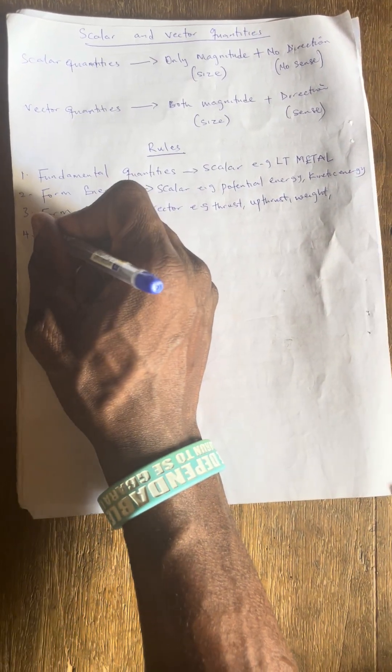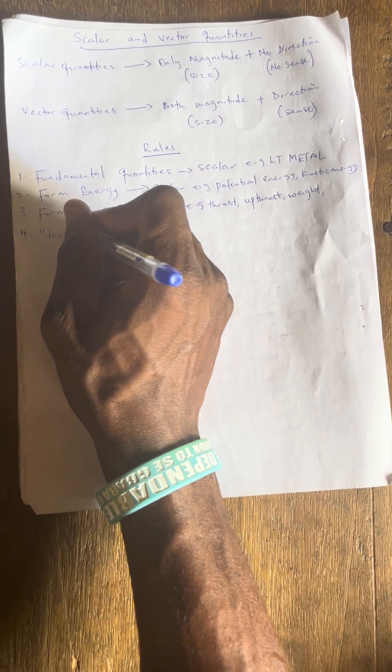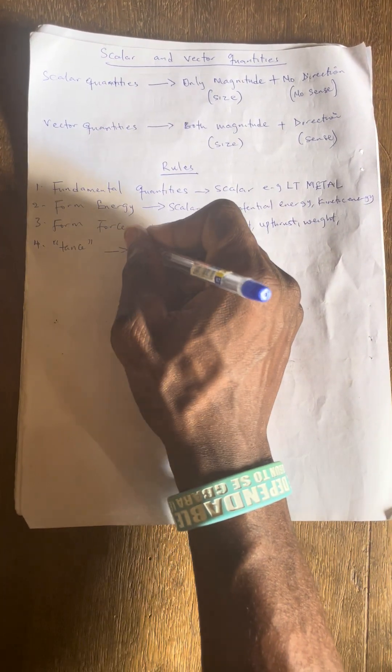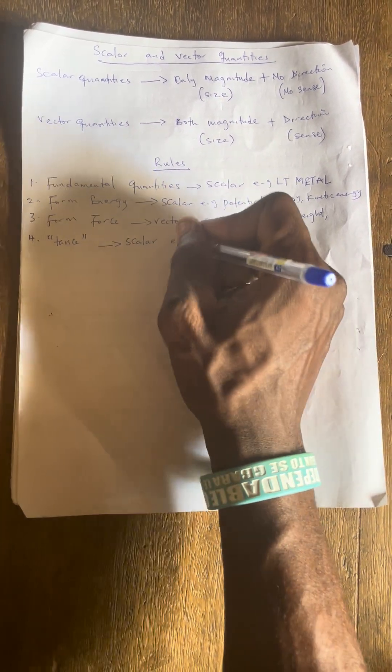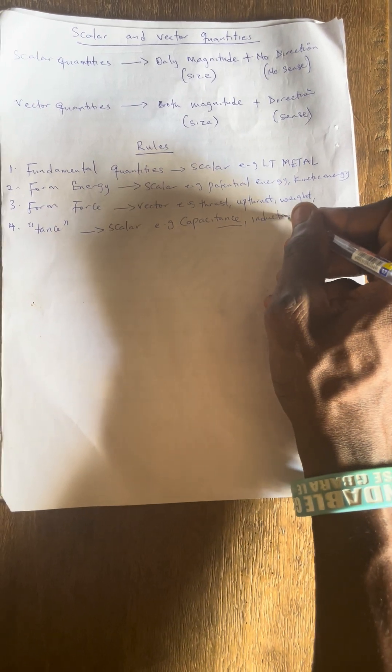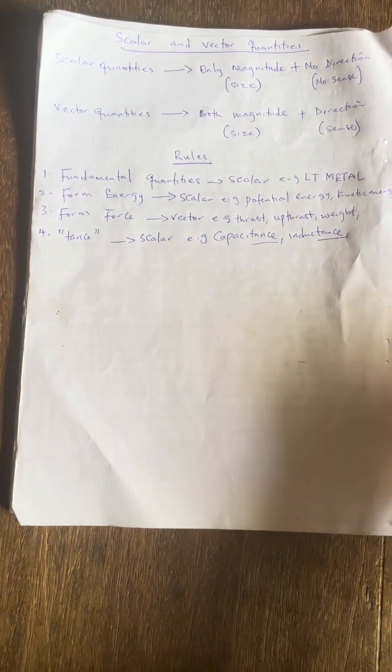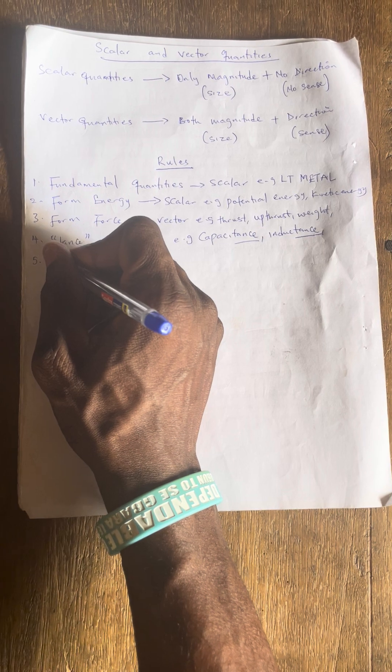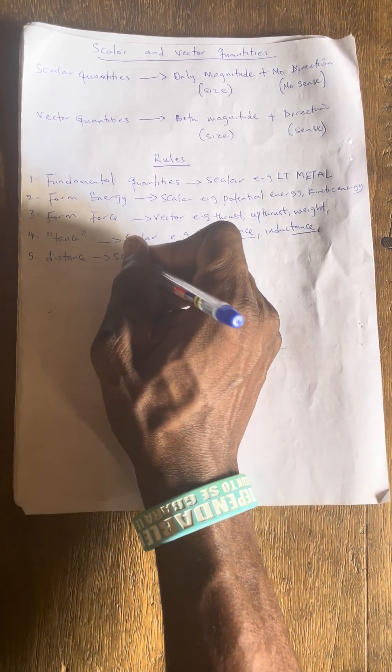Rule number four: most quantities that have the suffix '-ance' are scalar. The suffix refers to the attachment at the end of the word. For example, capacitance — you can see '-ance' at the end — inductance and resistance. Most quantities with the suffix '-ance' are scalar.